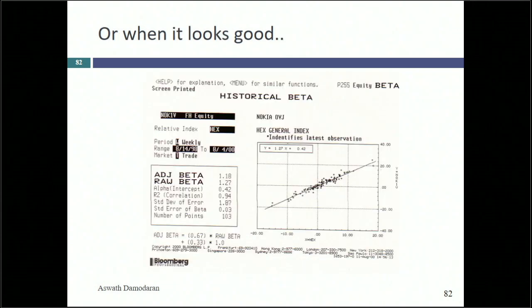The biggest thing about the Nokia regression is that the marginal investor was Barclays' Global Index Fund. If you think about how Barclays would measure Nokia's risk, they're definitely not looking at the Helsinki index — they're probably using some global index. Here's the bad news: if you want your regression to have a high R-squared and look good, you've got to run it against the wrong index. If you run it against the right index, your beta is always going to look terrible. There is no way out of this with regression.